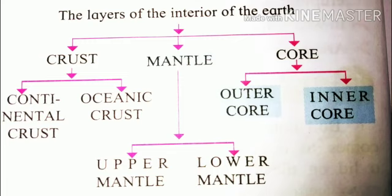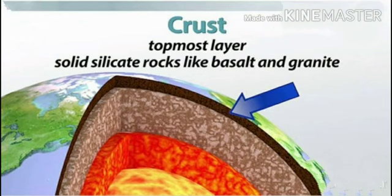While going from the earth's surface to its core, major changes occur in temperature and density. With respect to these two elements, the earth's interior can be divided into the following layers: crust, mantle, and core. The crust is further subdivided into continental crust and oceanic crust. The mantle is further divided into upper mantle and lower mantle. The core is further subdivided into outer core and inner core.